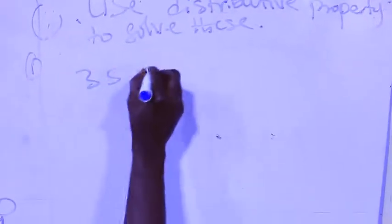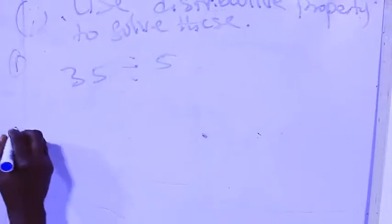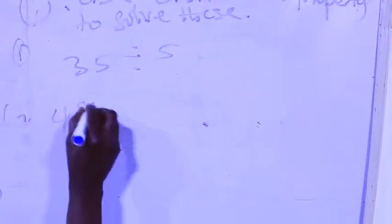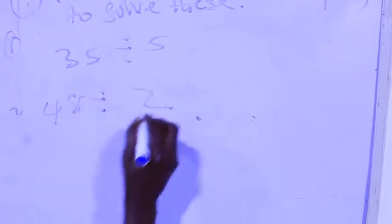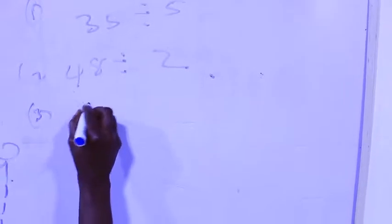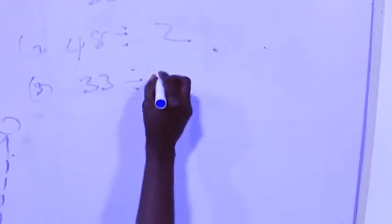Number two: 35 divided by 5. Number three: 48 divided by 2. Number four: 33 divided by 3.